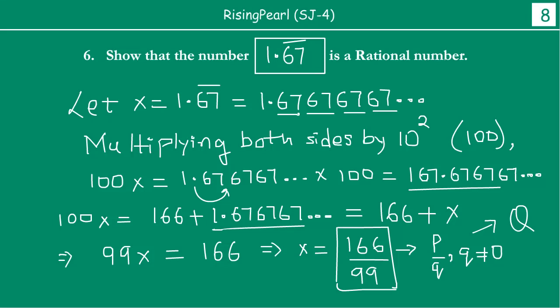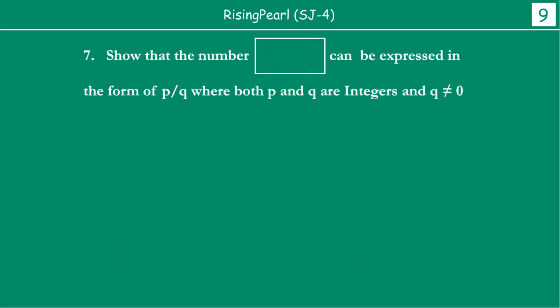So we saw two examples, shall we take maybe some more examples? We will take probably two more examples. Now this time we will try and prove what if we have 0 point something, let's see, 1, 2, 3 bar.